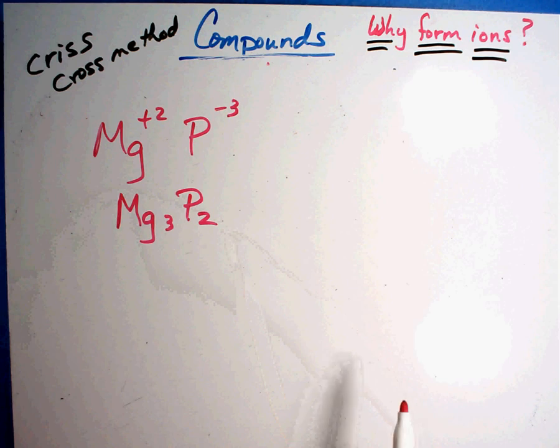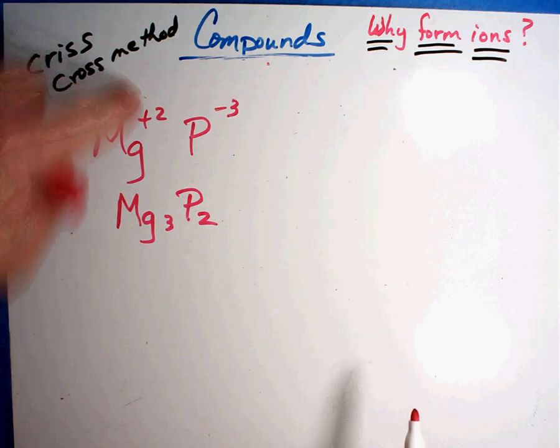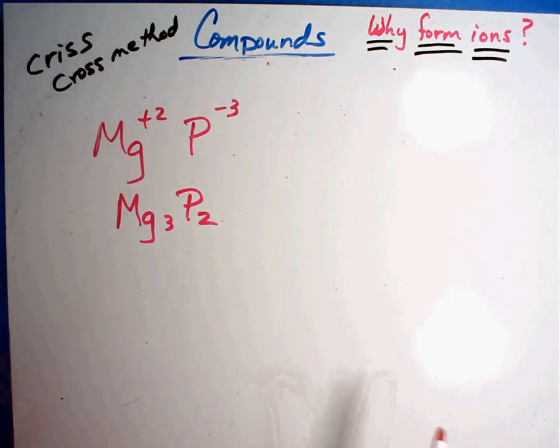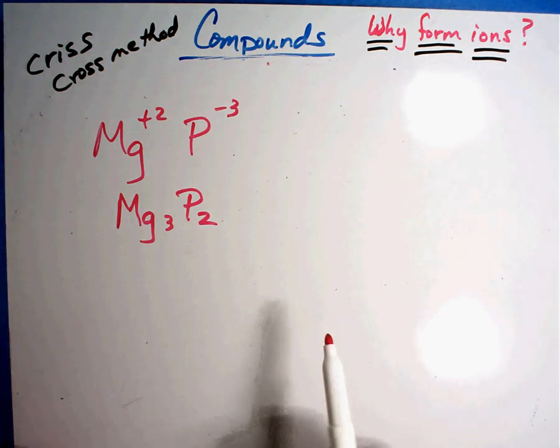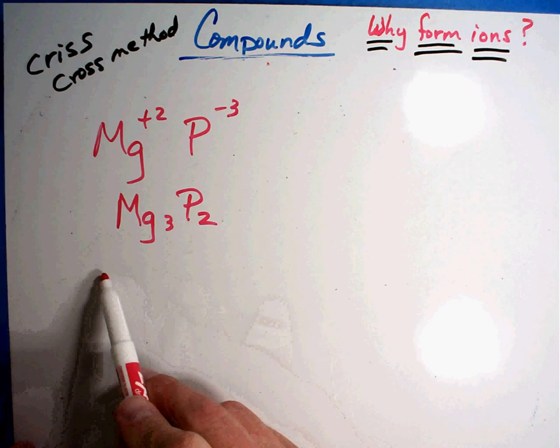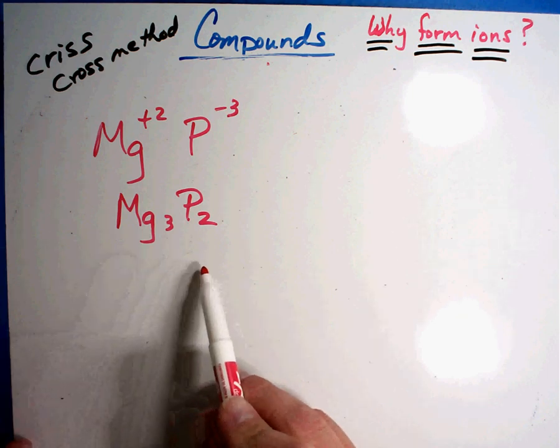Now notice I'm taking the numbers from the top and they go down to the bottom. The charges, the plus and minus signs, disappear. And so basically, there's my answer. It becomes magnesium phosphide.